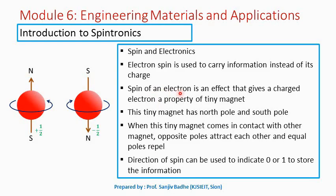Spin of an electron is a relativistic effect that gives the charged electron the property of a tiny magnet. This tiny magnet has a North Pole and a South Pole, like large magnets. So if the electron is spinning in this direction, this becomes the North Pole and this becomes the South Pole, and if the direction of spin is opposite, then this becomes the North Pole and this becomes the South Pole.